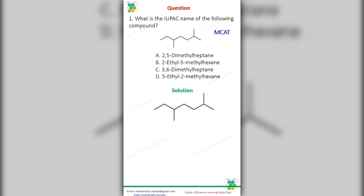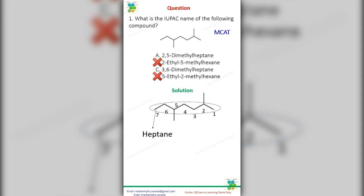The first task in naming alkanes is identifying the longest carbon chain. In this case, the longest chain has seven carbons, so the parent alkane ends in heptane. Choices B and D can be eliminated.